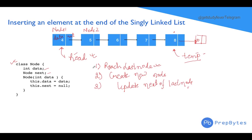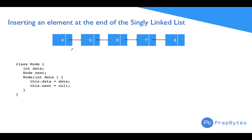To insert at the end of the linked list, we first need to reach the last node. Starting from head, we iterate through all the nodes. We know the last node's next points to null, so the moment we reach a node whose next is null, we know we have reached the last node.